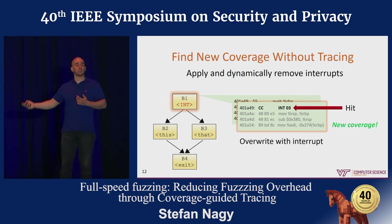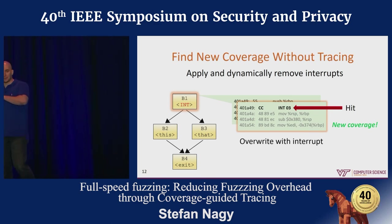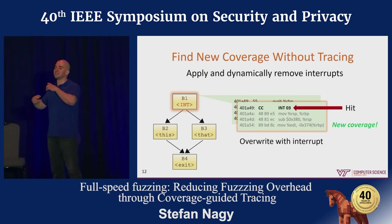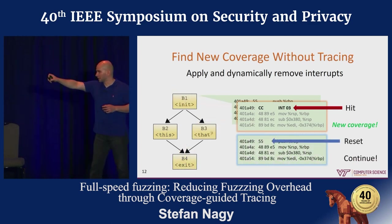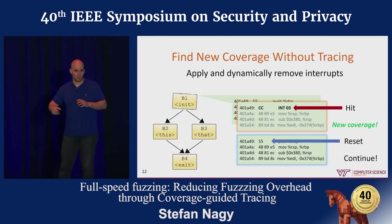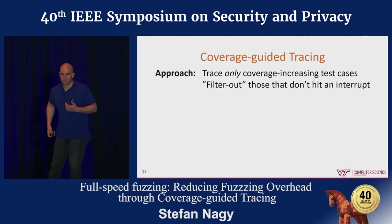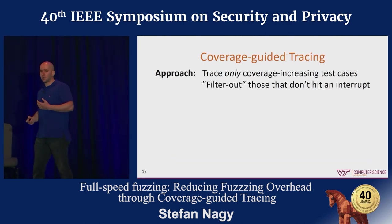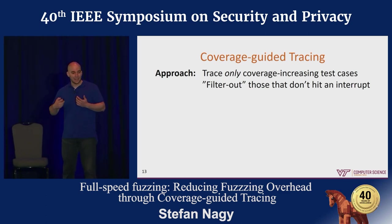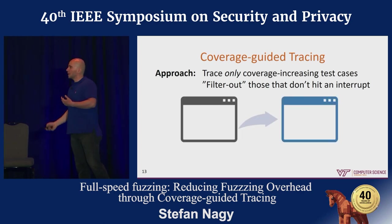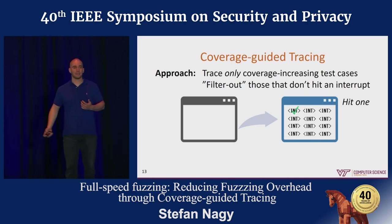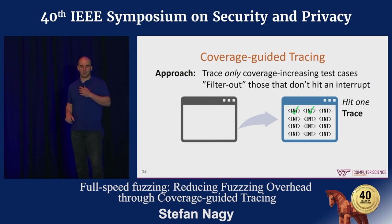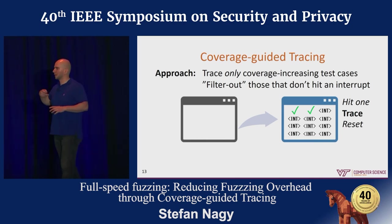We want to ensure that no future test cases with the same code coverage as that first test case will also hit that interrupt and mistakenly be marked as coverage-increasing. So we reset that basic block — remove the interrupt — so that no future executions going through that basic block trigger the interrupt, and no other test cases are mistakenly marked as coverage-increasing. On a macro scale, we only trace those few coverage-increasing test cases and filter out the rest based on them not hitting any interrupts. Given the target application, we modify it statically and apply these interrupts before running it. The first test case that hits an interrupt gets traced, we find all its basic blocks using a separate binary, remove the corresponding interrupts, and move on to the next test case.